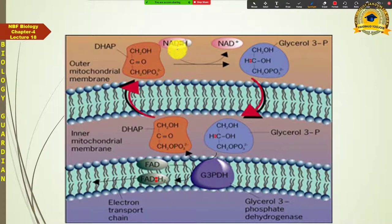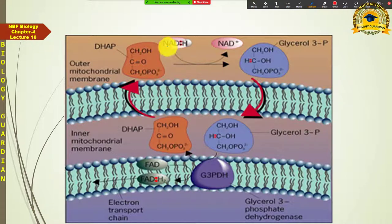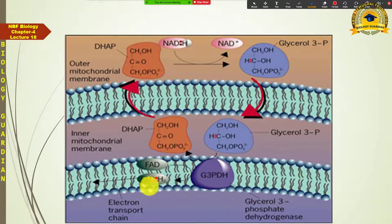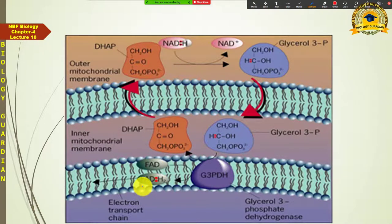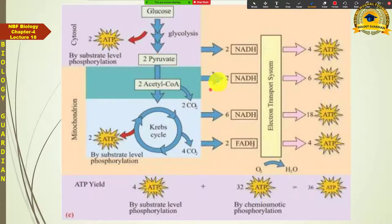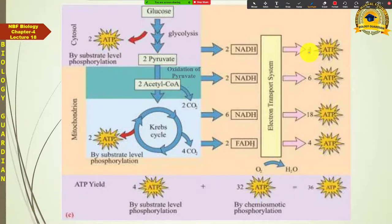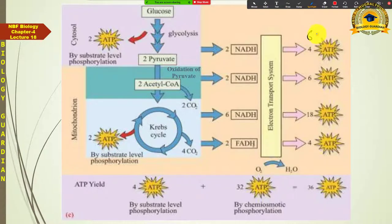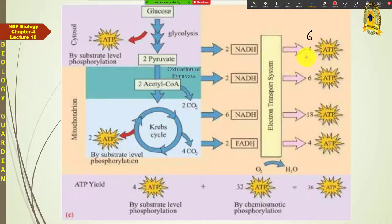So the cytoplasmic NADH₂ molecules do not directly enter the mitochondria — they only donate their electrons inside. Because they are converted to FADH₂ in this process, their ATP-yielding potential decreases. FADH₂ generates 2 ATPs instead of the 3 ATPs that NADH₂ would generate. Therefore, these 2 glycolysis NADH₂ molecules yield 4 ATPs instead of 6 ATPs in eukaryotes — this is why prokaryotes have 2 more ATPs.